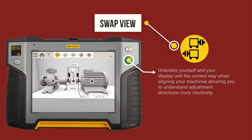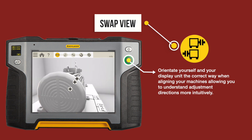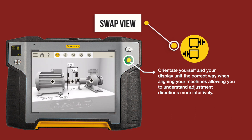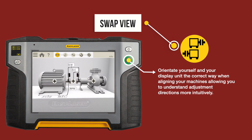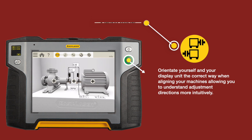Swap view. Orientate yourself and your display unit the correct way when aligning your machines, allowing you to understand adjustment directions more intuitively.